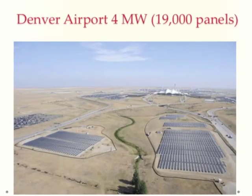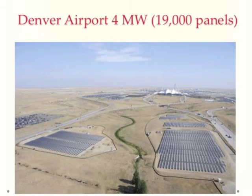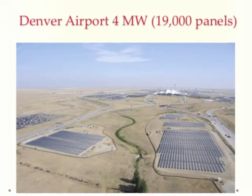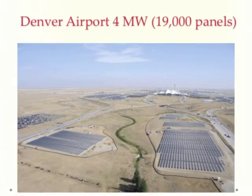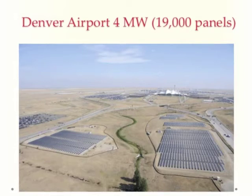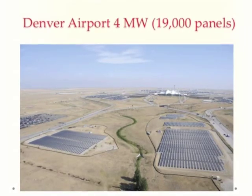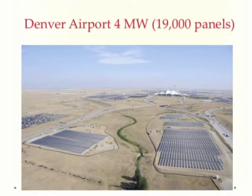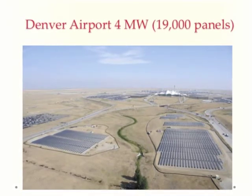The grid-connected PV systems with roof-mounted PV arrays are examples of distributed power systems. In contrast, there is a central power system concept — here, a large central power generator at the Denver airport with ground-mounted PV arrays.